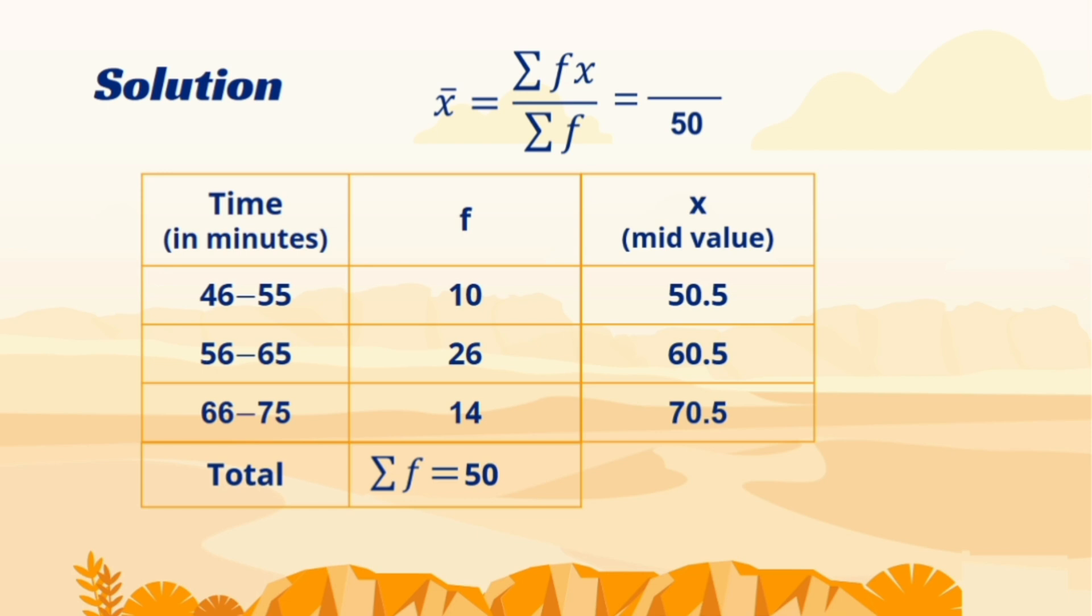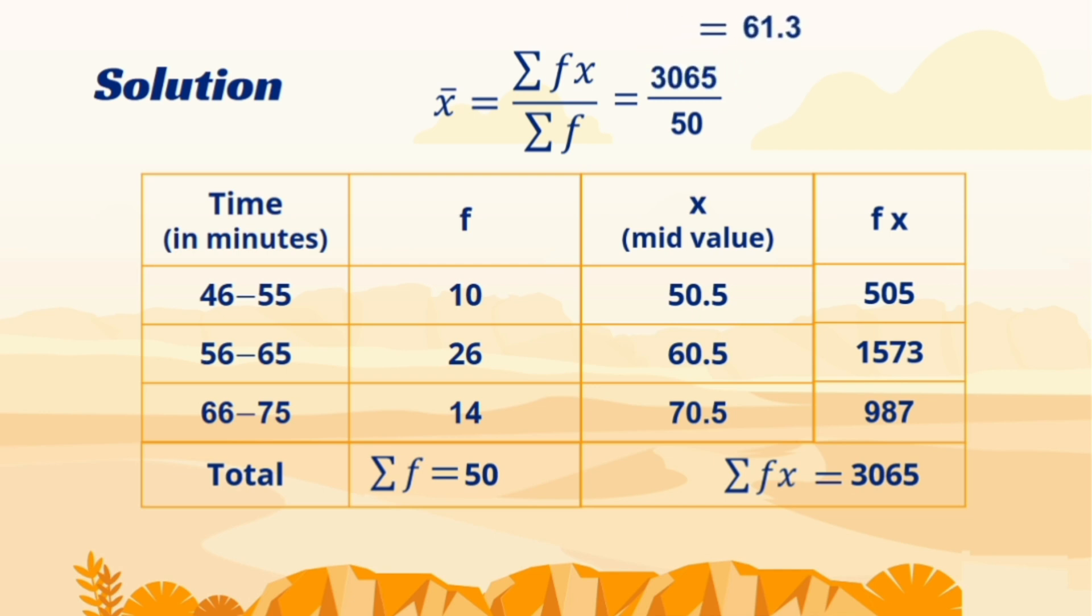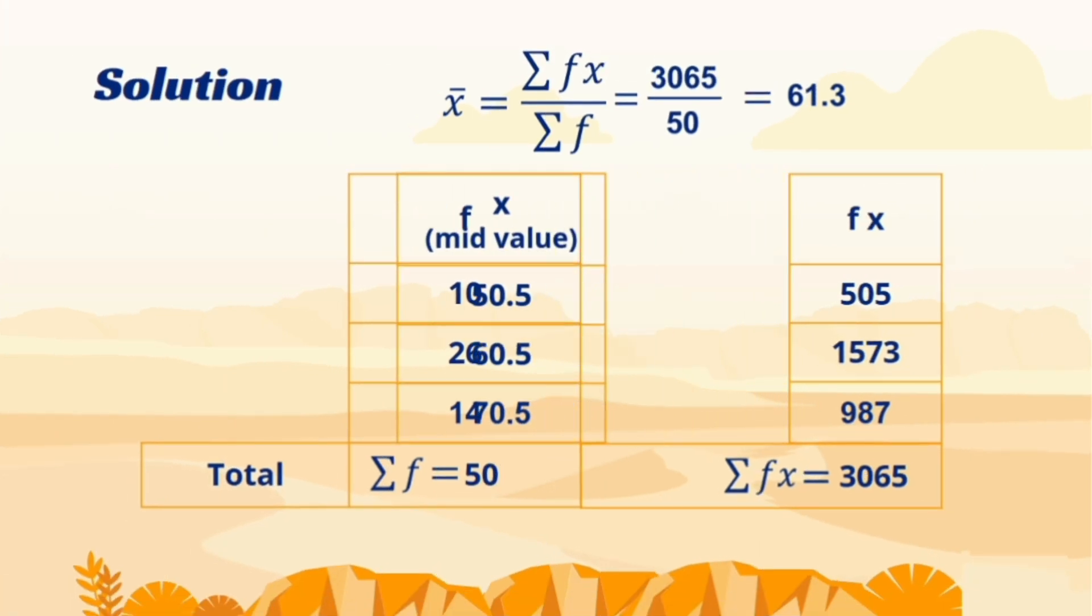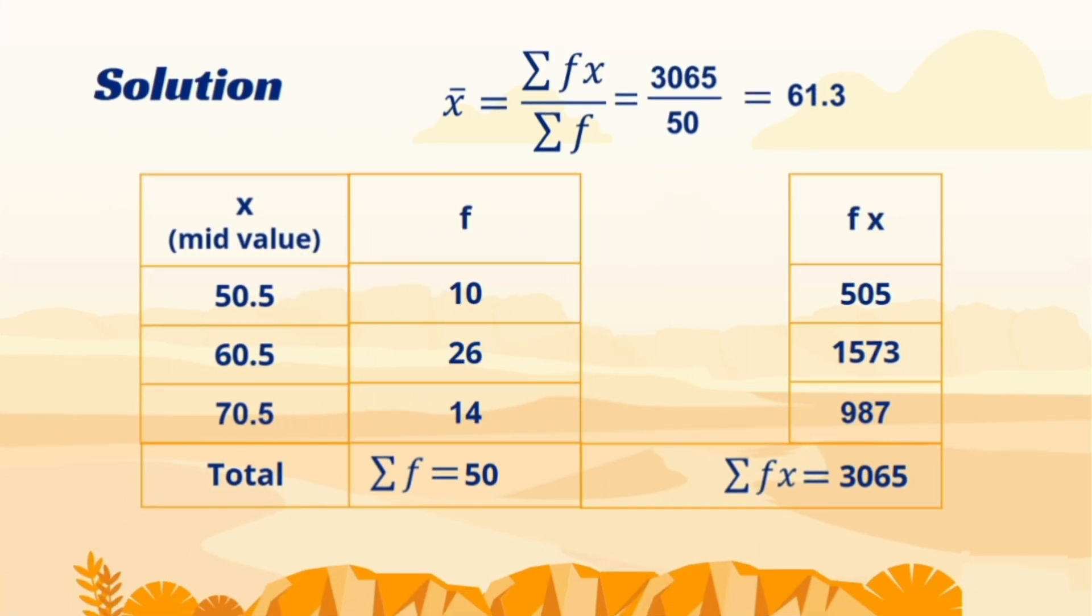The mid values are actual values of a variable. We don't require to sum this column, but we need the sum of the product of frequency and mid values of each class. By putting the required values in the formula, we found that on average students took about one hour to complete their examination. If classes are not given and only the mid values are there, then it becomes more simpler as we don't need to make an extra column for mid values.